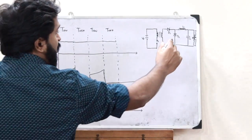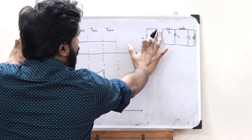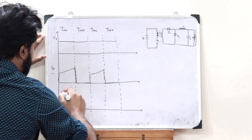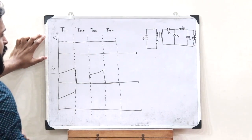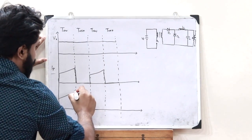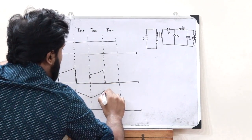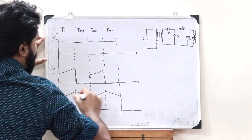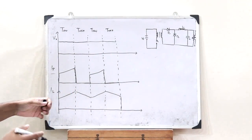Next, let us see the waveform for the current flowing through the inductor. As the switch is turned on, the transformer induces a voltage and the inductor current starts rising from a minimum value to a maximum value. When the switch is turned off, this inductor starts discharging — current reduces from a maximum to a minimum value. Again when the switch is turned on, current increases, and when turned off, it decreases. This is the inductor current waveform for this forward converter.